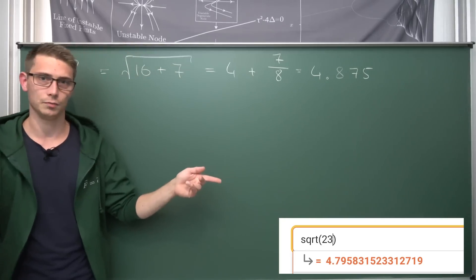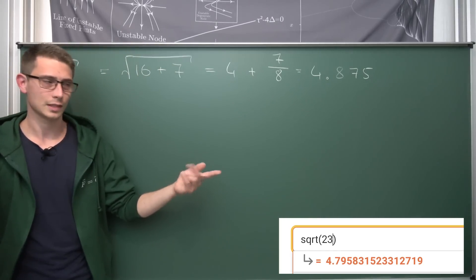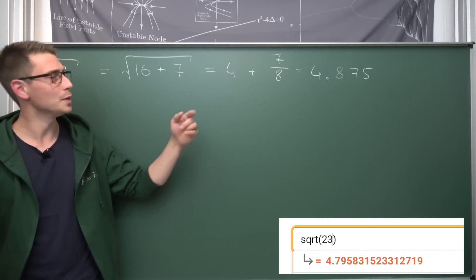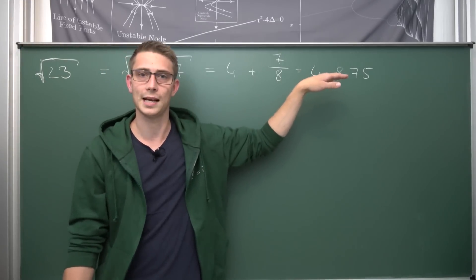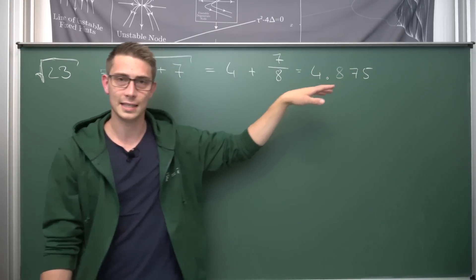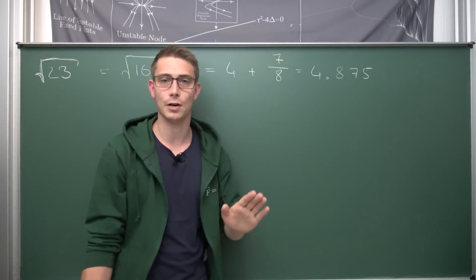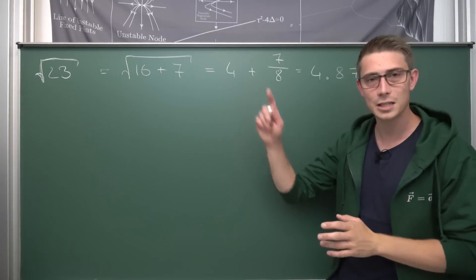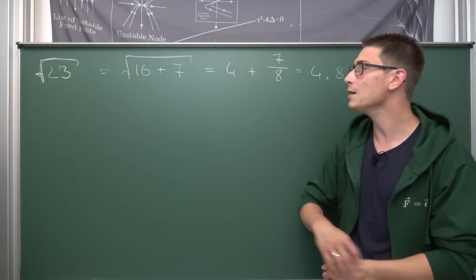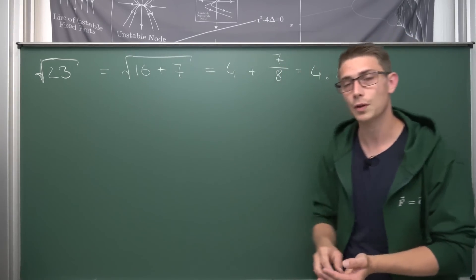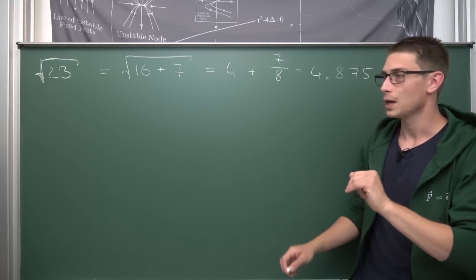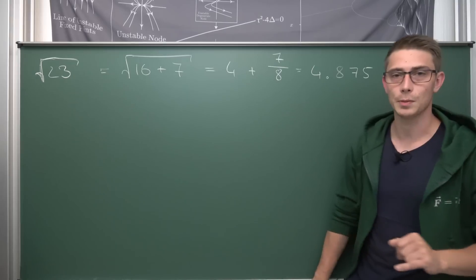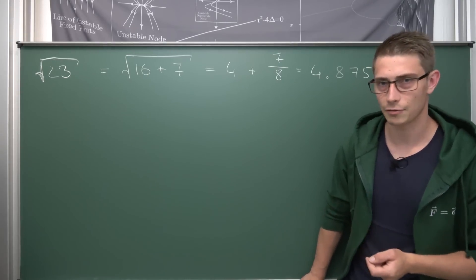And this is the actual value — isn't that pretty good? We are really close, and there's even a better way to get a more precise value, which we'll discuss at the very end using the upper bound. But for now, let's take a look at another example to give you a bit more practice with this method.